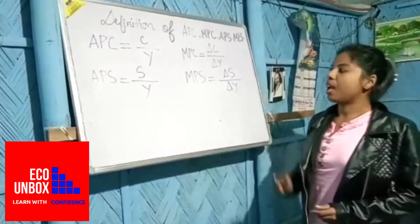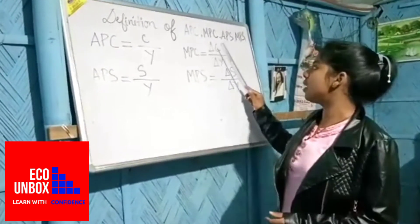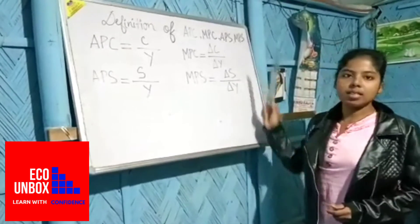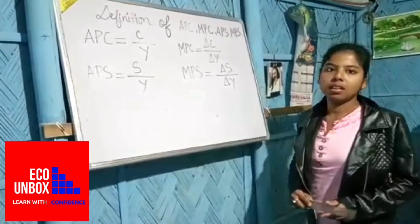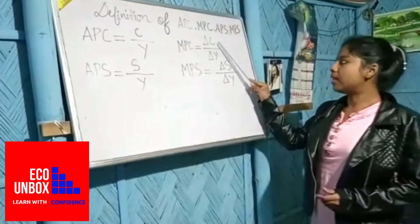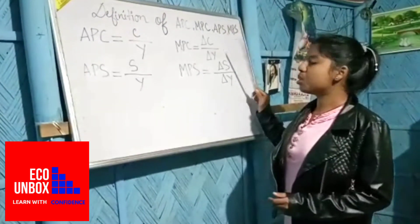Next concept is MPC. MPC can be defined as the ratio of change in total consumption to change in income. Symbolically, MPC equals delta C by delta Y, where delta C means change in consumption and delta Y means change in income.